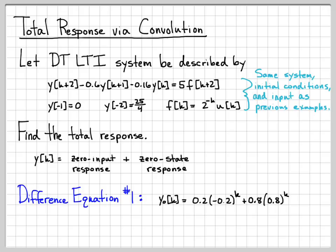The zero-input response was equal to 0.2(-0.2)^k + 0.8(0.8)^k times u[k].